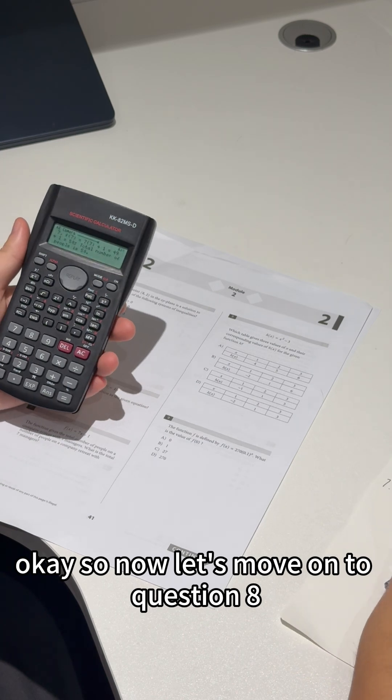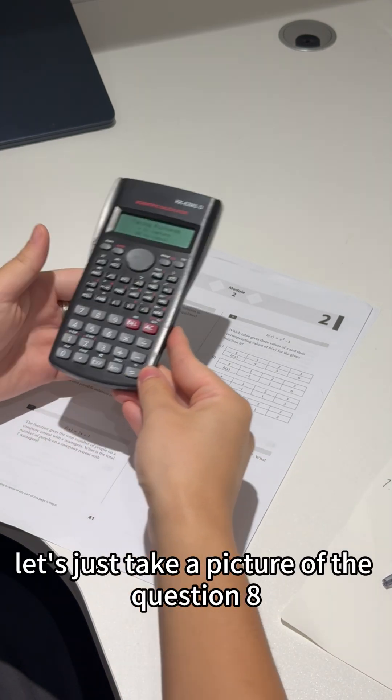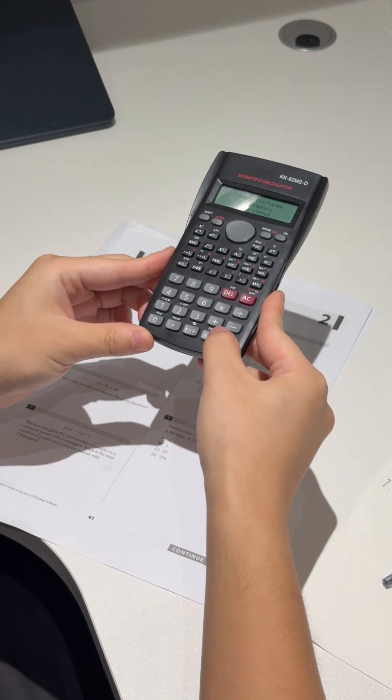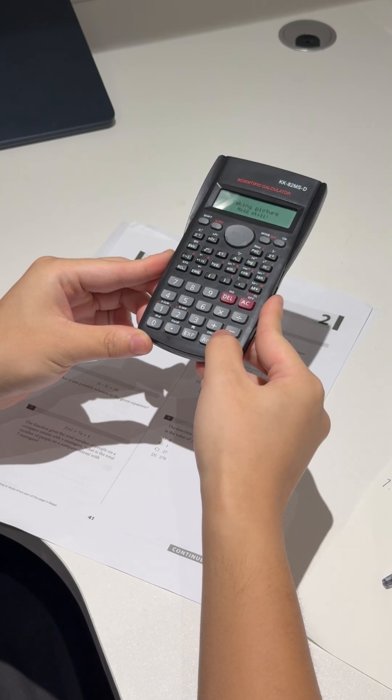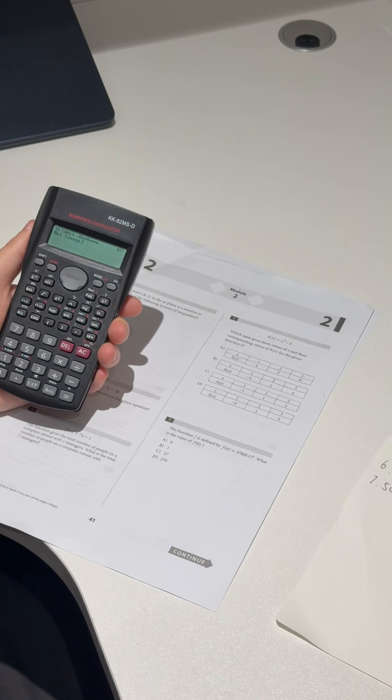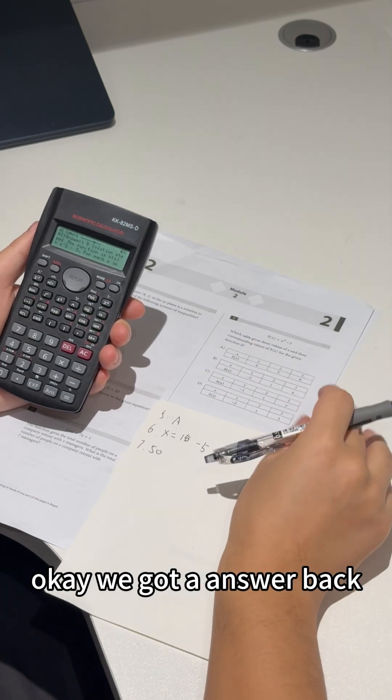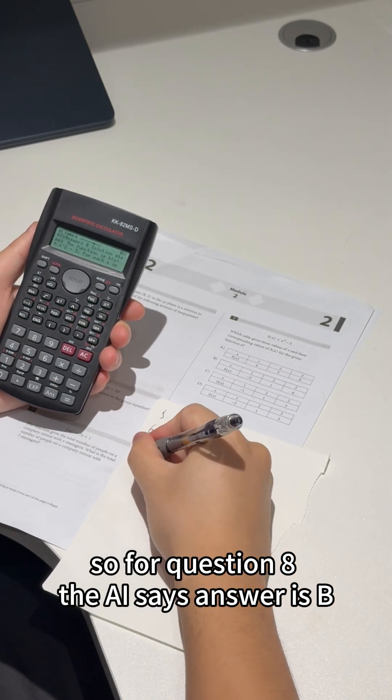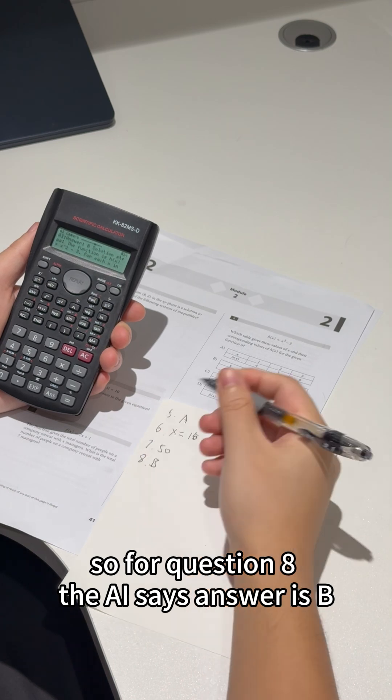Now let's move on to question eight. Let's just take the picture up to question eight. Let's send it to AI. Okay, we got an answer. For question eight, the AI says the answer is B. Let's move on.